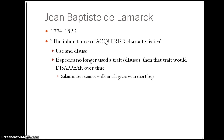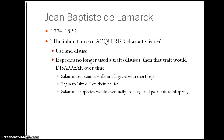Let's take a salamander for example. Salamanders have a hard time walking in tall grass because they have short legs. So if salamanders had to get through that grass, instead of walking, maybe they would slither on their bellies. Since salamanders weren't going to use their legs anymore, Lamarck would say that salamanders would probably lose their legs eventually and pass that trait of having no legs onto its offspring.